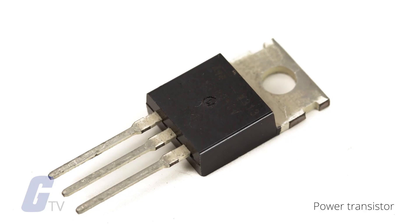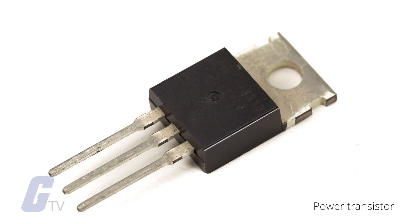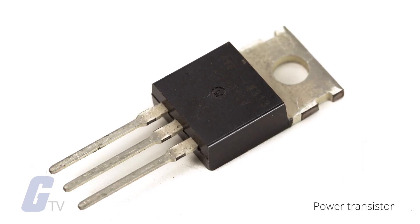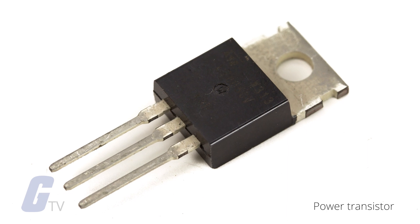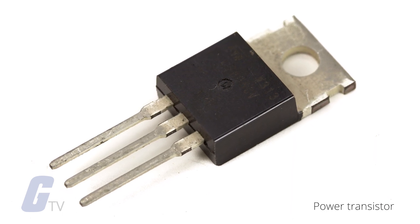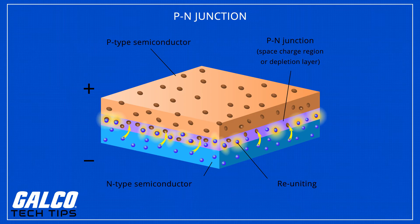Transistors consist of three layers of a semiconductor material, with each of them being capable of carrying a current such as germanium or silicon, and each will have at least three terminals for connecting to an external circuit. The semiconductor material is granted special properties through a chemical process known as doping.